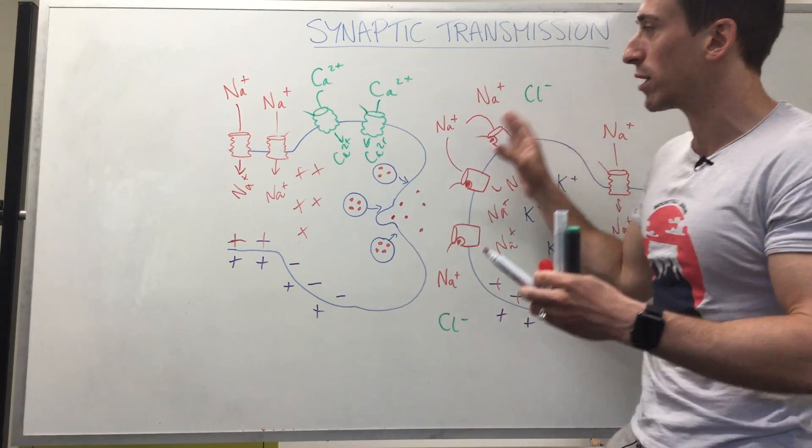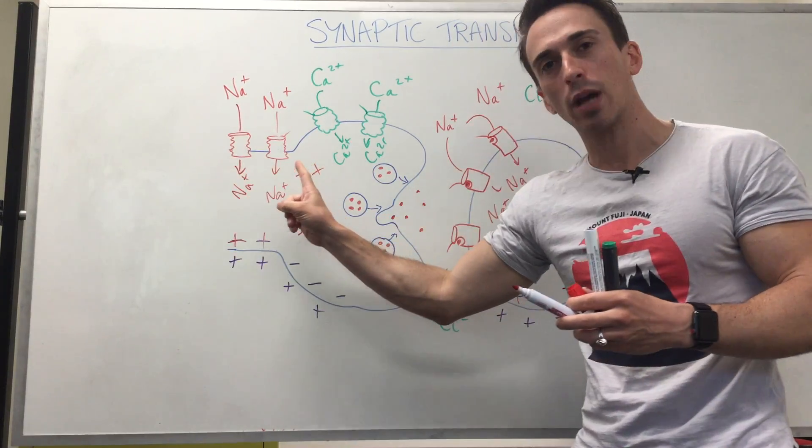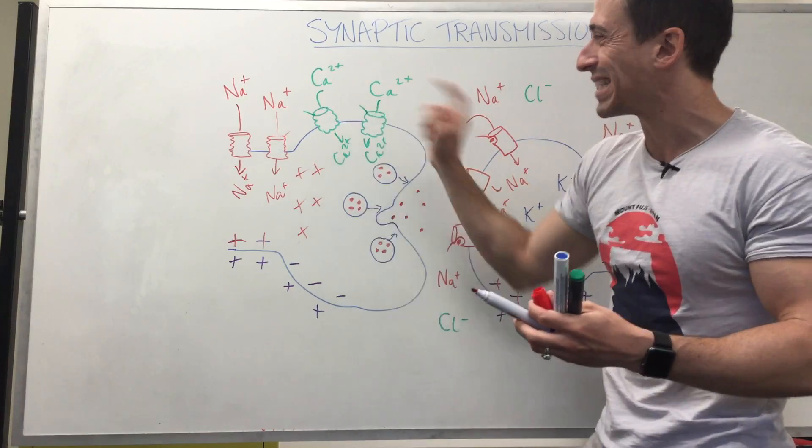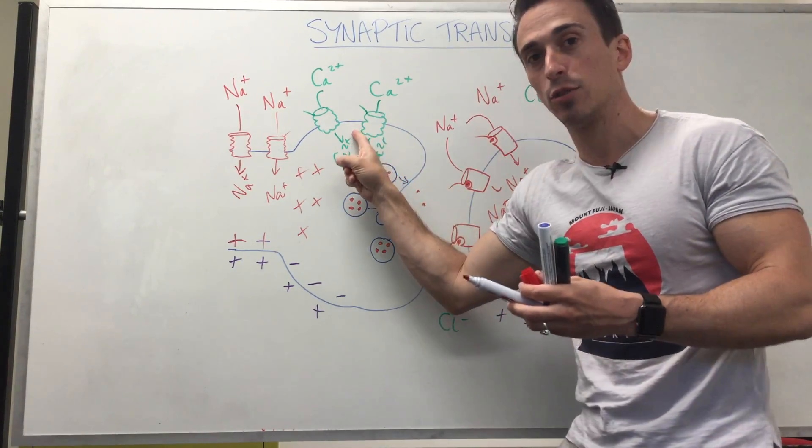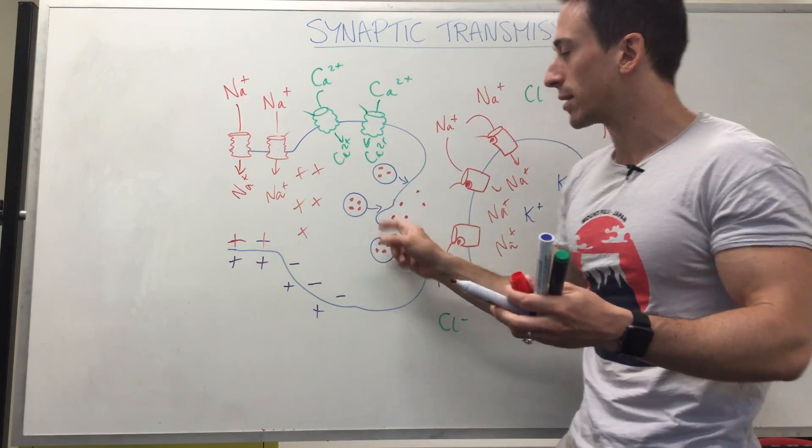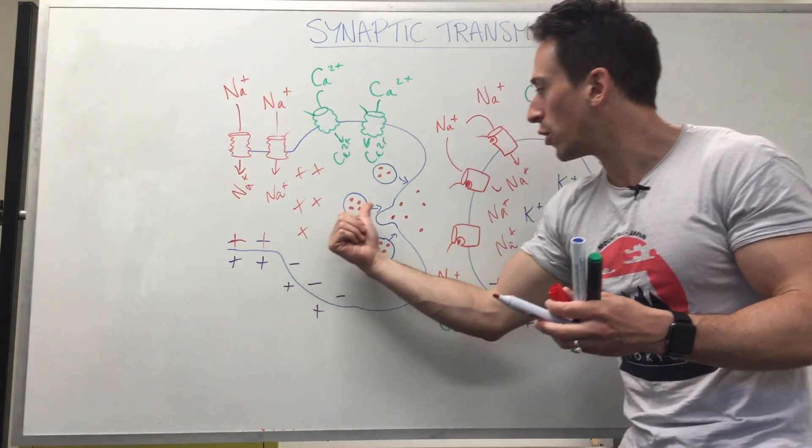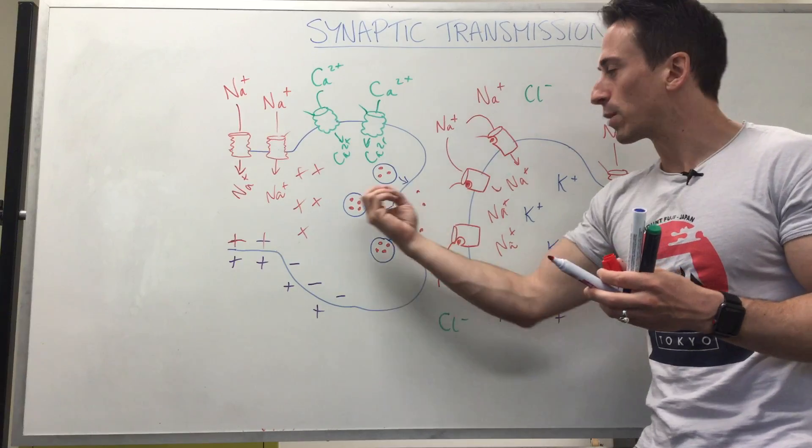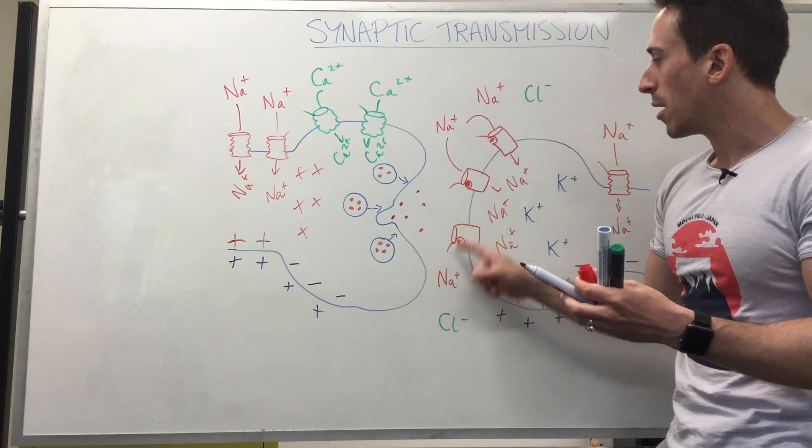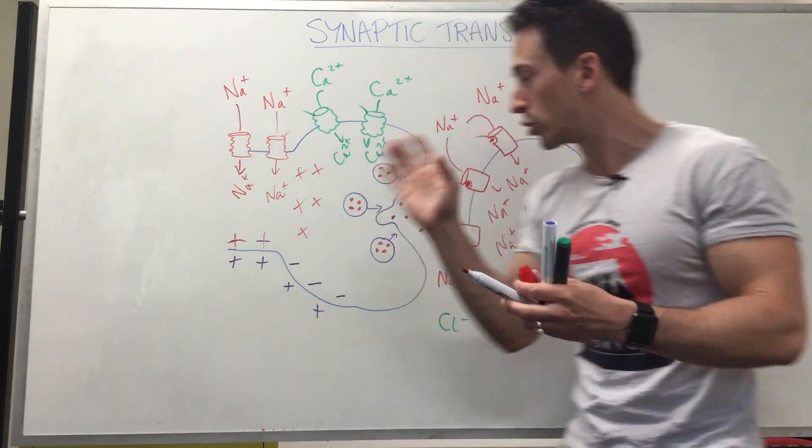So what are the phases of synaptic transmission? You have the action potential coming in with voltage-gated sodium channels. Enough sodium goes in that it stimulates voltage-gated calcium channels. Calcium comes in. This stimulates these vesicles that contain neurotransmitters to fuse with the membrane and release their contents. The neurotransmitters will diffuse across the synapse and bind to their receptors on the post-synaptic neuron.